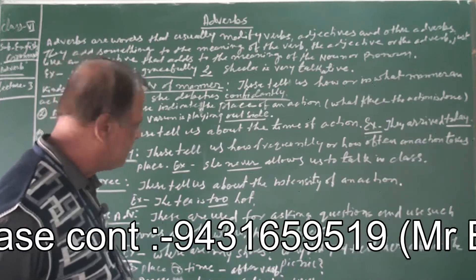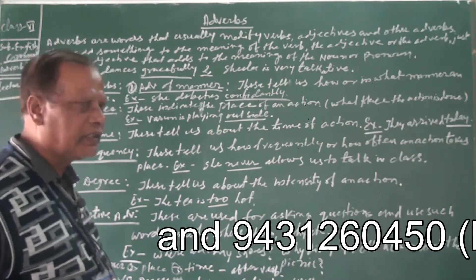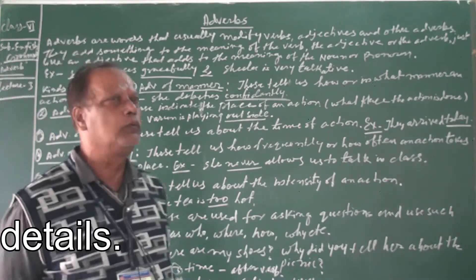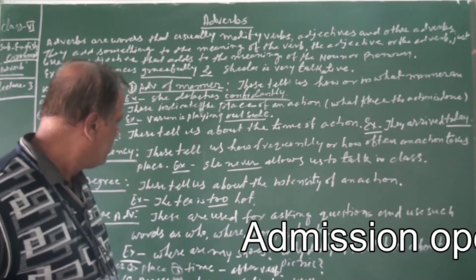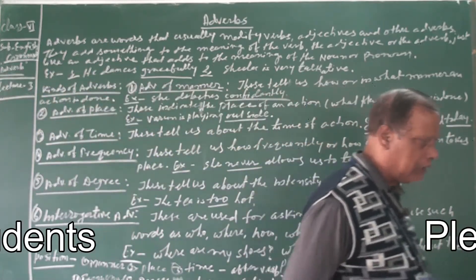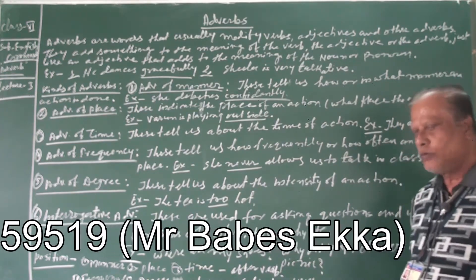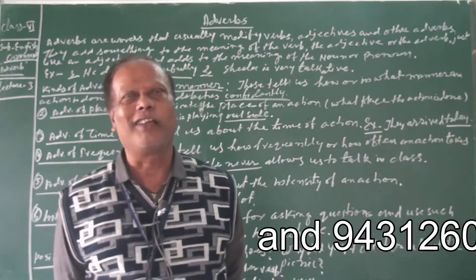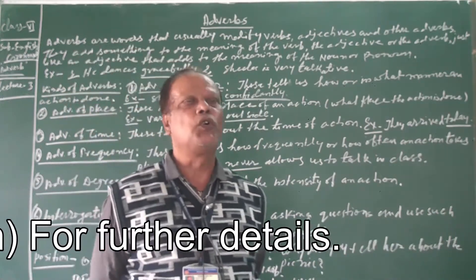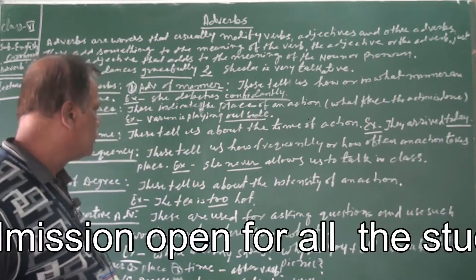The last kind is interrogative adverbs. These are used for asking questions, using words such as where, how, why, whom, whose, etc. For example: 'Where are my shoes?' Here, the word 'where' asks a question about place — the speaker wants to know about the place, therefore uses 'where.'